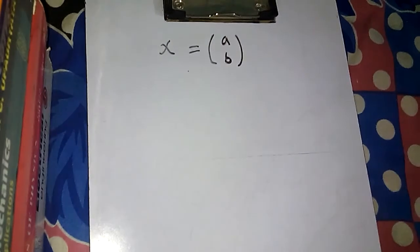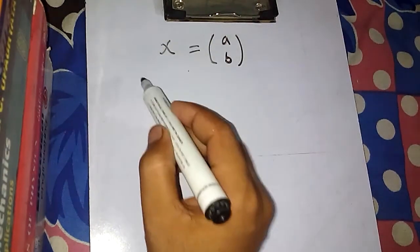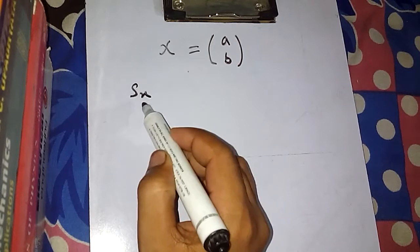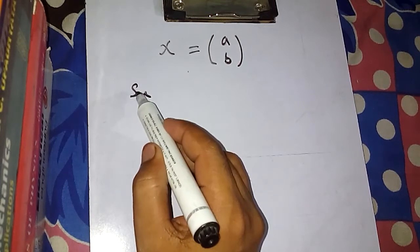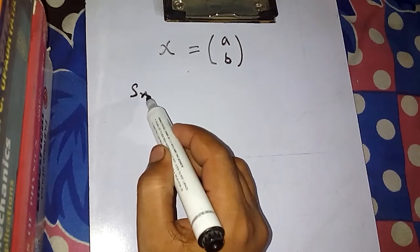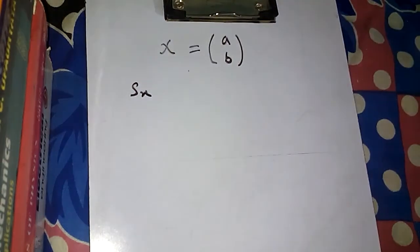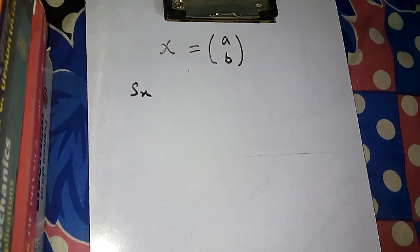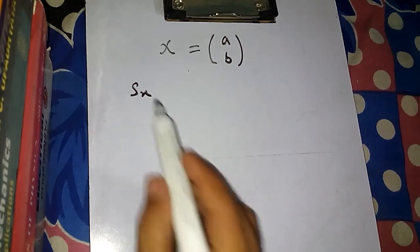If you want to find S_x — the X component of the spin angular momentum — we know there are two types of angular momentum quantum numbers: the orbital angular momentum quantum number, represented by L, L_x, L_y, L_z, and the spin angular momentum quantum number, represented by S_x, S_y, S_z.